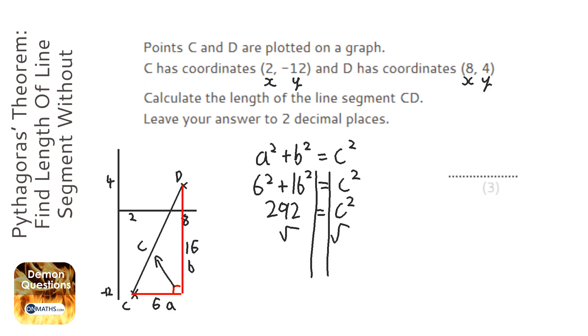And it says 292 equals C squared. And I'm going to square root both sides to work out what C is. So root answer. And I get 17.088. So to two decimal places, it's going to be 17.09.